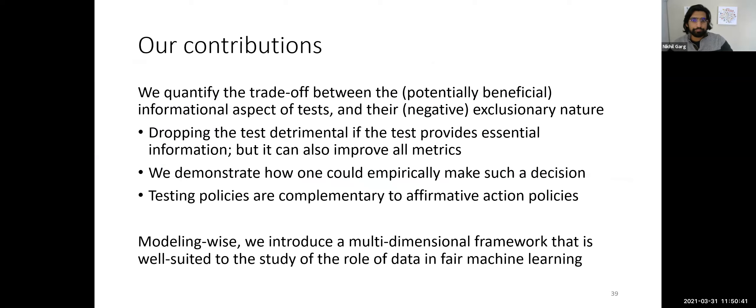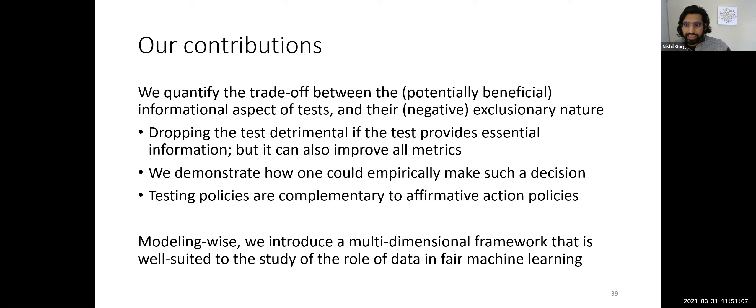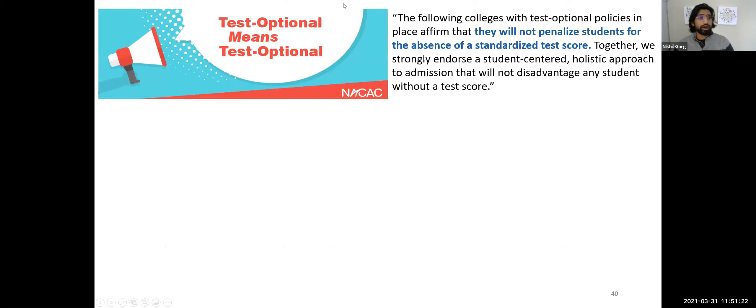To wrap up: we quantify the trade-off between the informational aspect and the inclusionary nature of the test. We show it's really not a trade-off between objectives like academic merit and diversity, but rather about whether the informational content of the test helps or hurts all your objectives together. For those on the fairness and machine learning side, we believe this multidimensional framework is a useful one for studying the role of data and features in machine learning going forward.